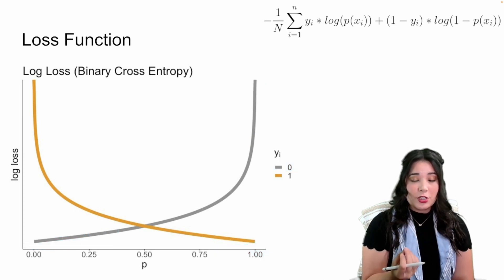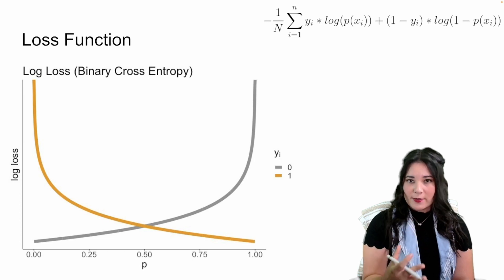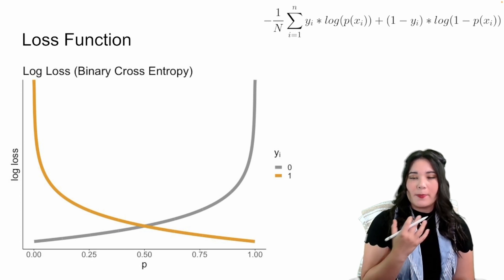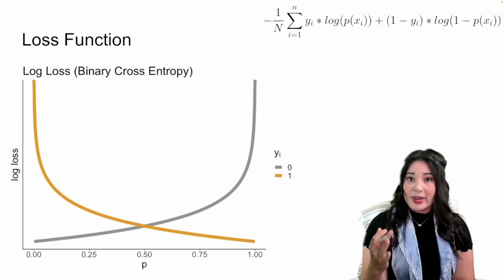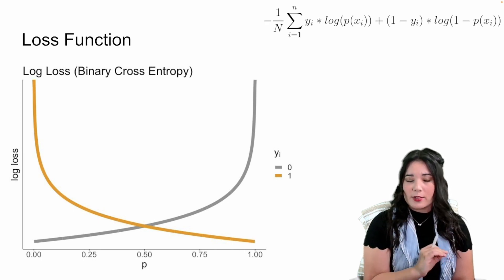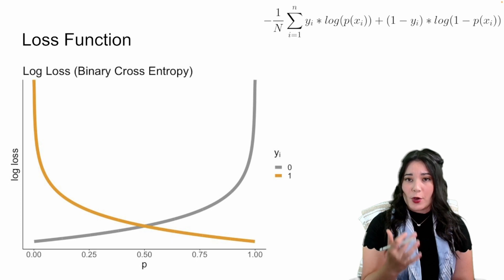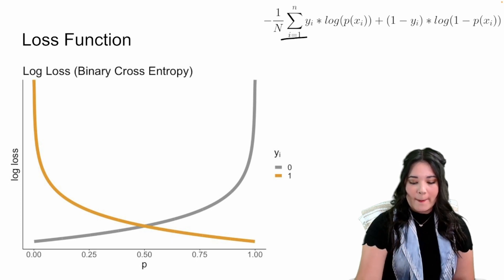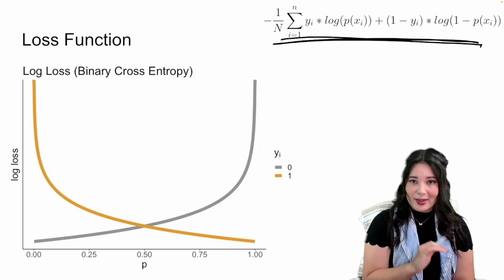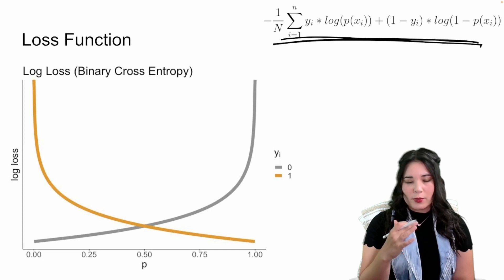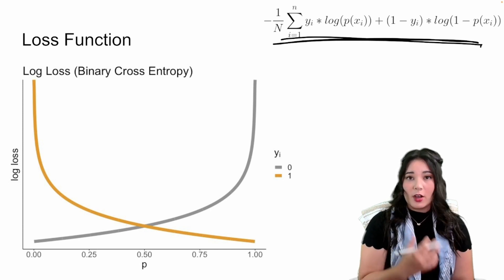Hopefully this gives you more intuition about how log loss works. Remember, the purpose of a loss function is to be a number that measures model performance where lower values are better. When we choose different parameters — like the intercept or the coefficients — we want to choose values that minimize this log loss. By the way, log loss is often referred to as binary cross entropy; they're both referring to the same exact formula. Alright, that's all I have for you — I will see you next time.